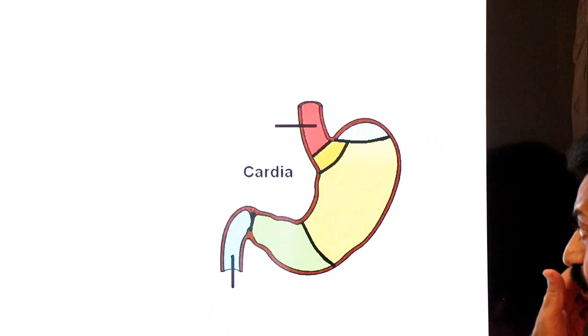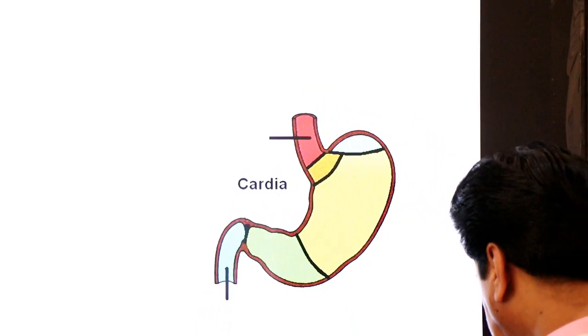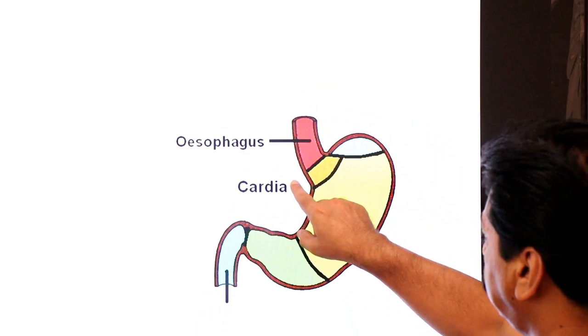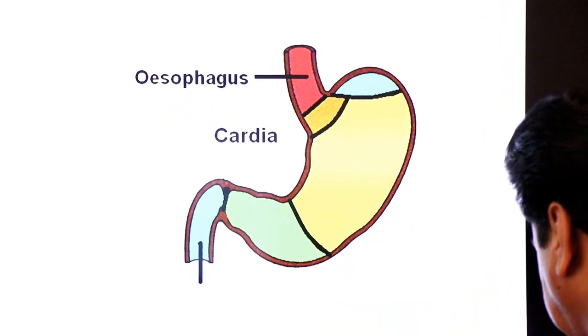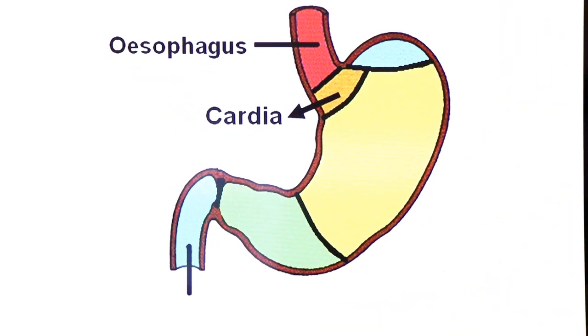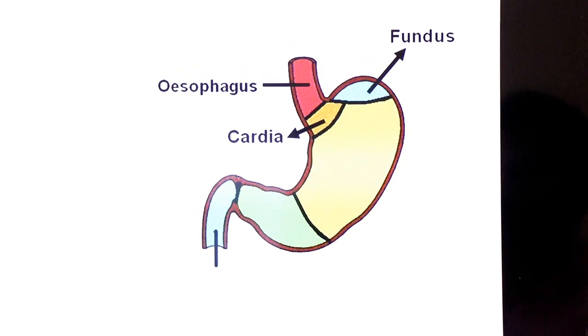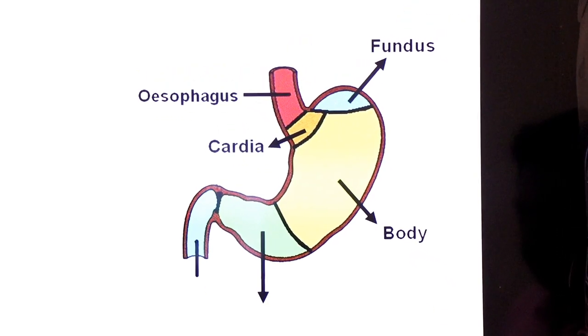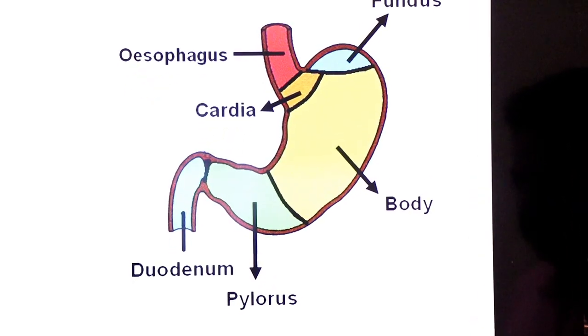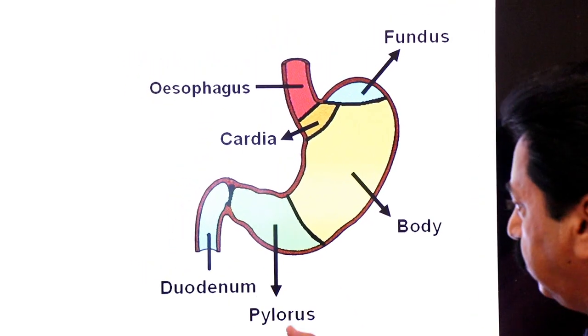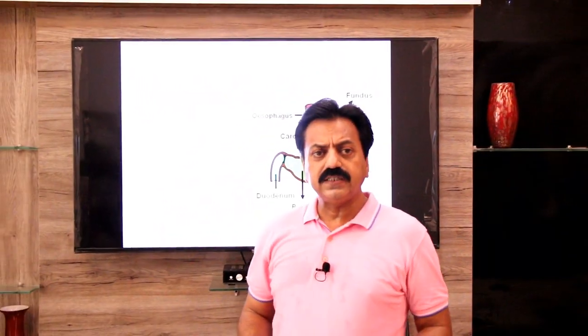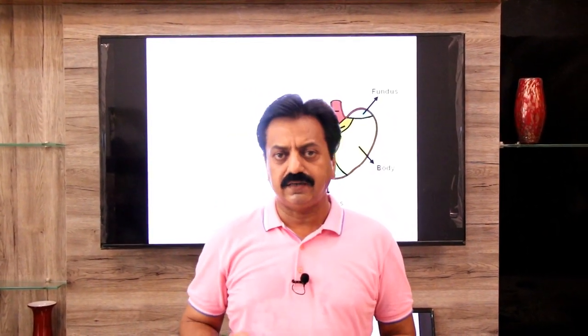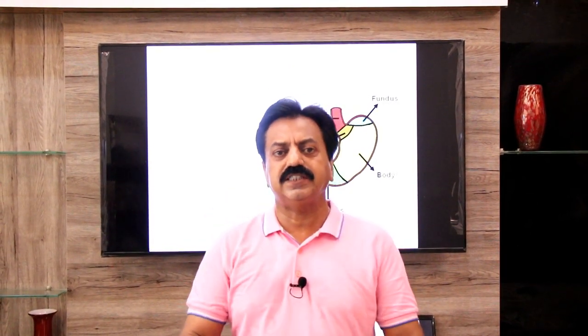Dear students, let's review the four parts of the stomach. The first part is the cardiac part (cardia), the second is the fundus, the third is the central main part called the body, and the fourth is the pylorus that opens into the duodenum. Ab hum in charon ke functions padhenge.